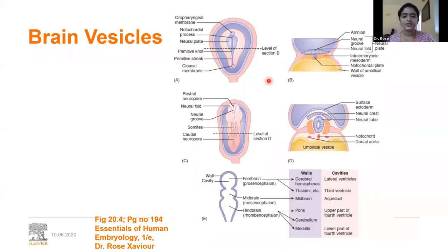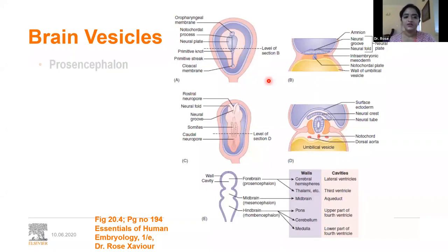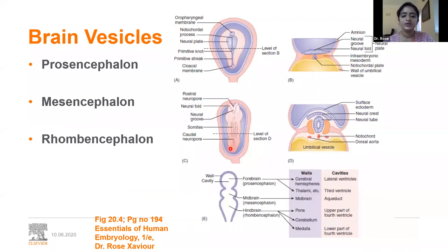Moving on with the development of the central nervous system: we now have a single neural tube formed with both the anterior and posterior neuropores closed. At the cranial end, the neural tube forms three important brain vesicles. The caudal end gives rise to the spinal cord. The three brain vesicles are: prosencephalon, known as the forebrain; mesencephalon, known as the midbrain; and rhombencephalon, known as the hindbrain.